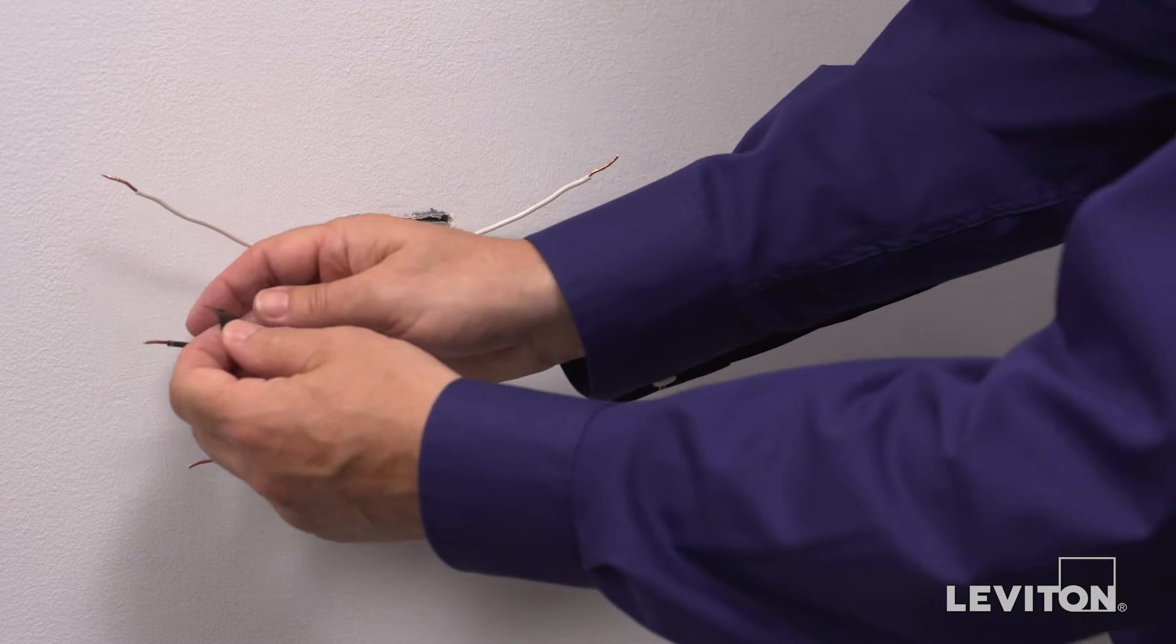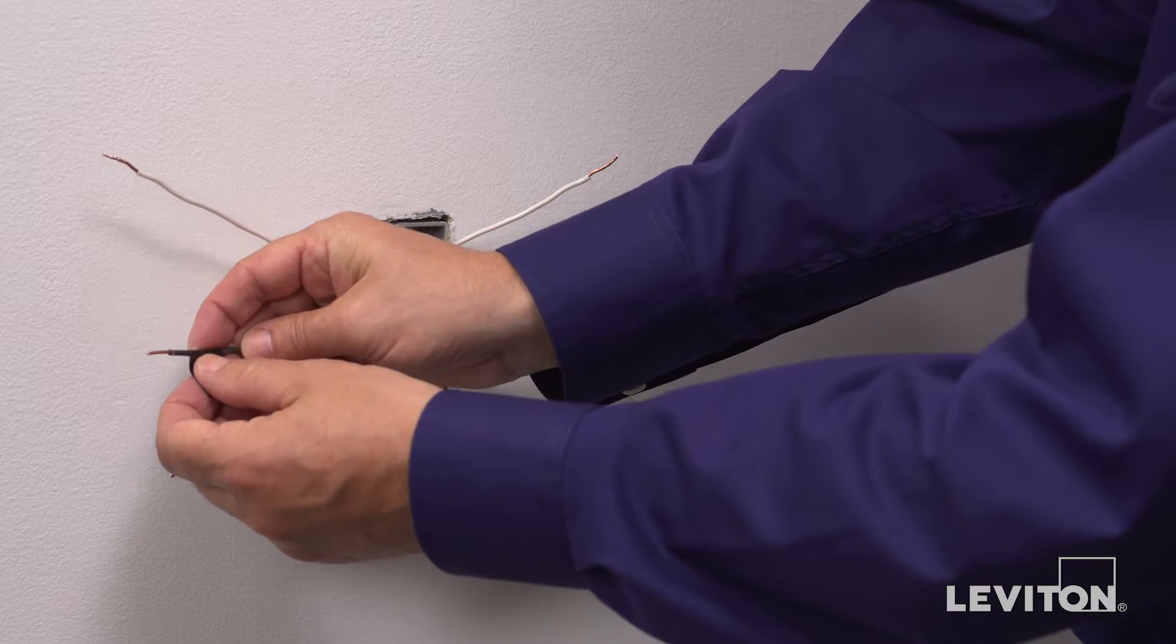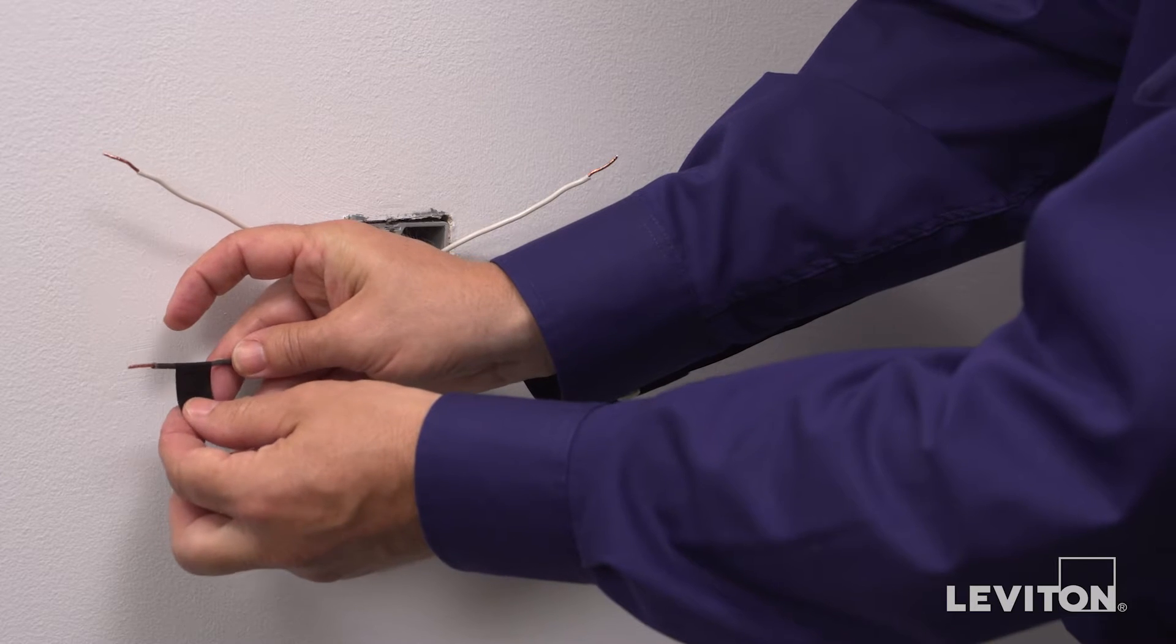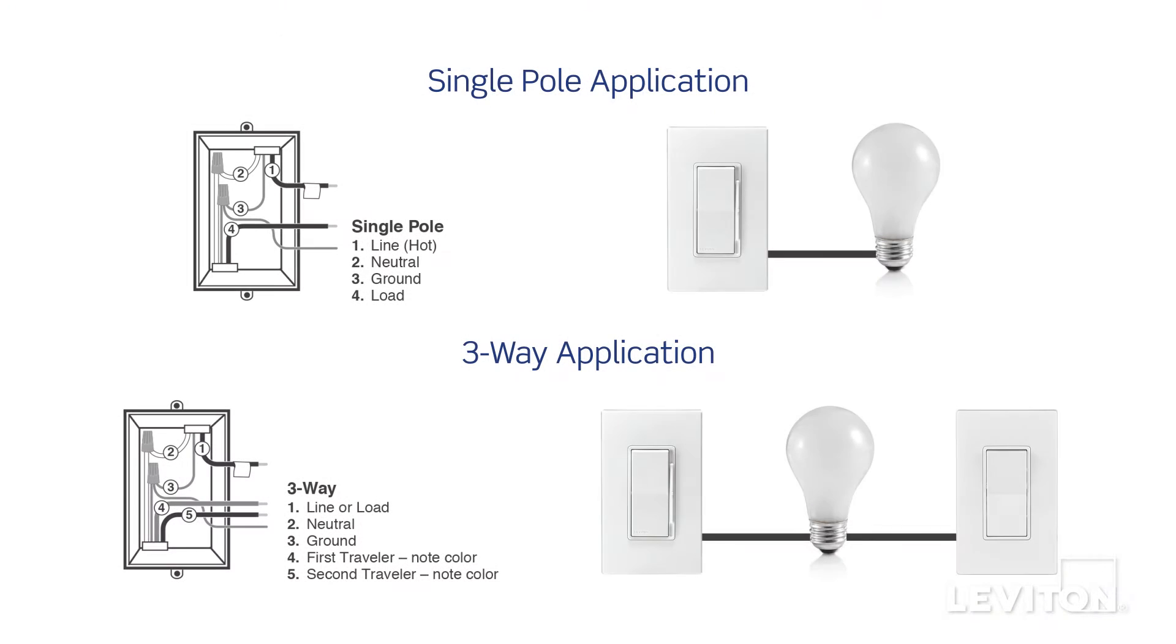Use a small piece of electrical tape to label the hot wire. Identify whether the wiring application is single-pole or a three-way application. If the wiring in the wallbox does not resemble either of these configurations, consult an electrician. We will proceed with a single-pole application.